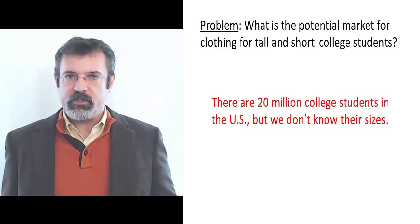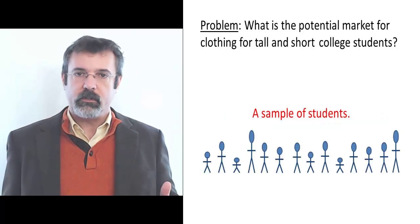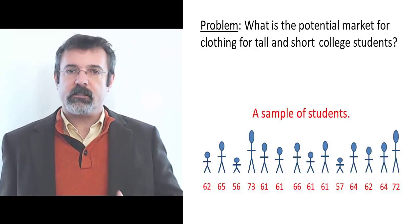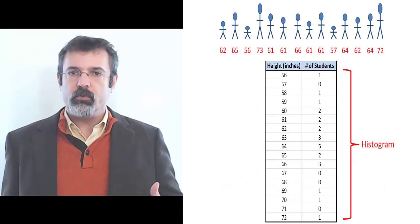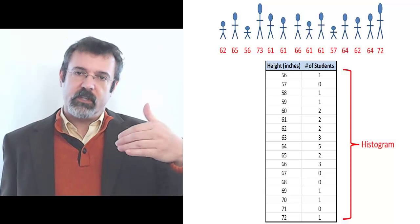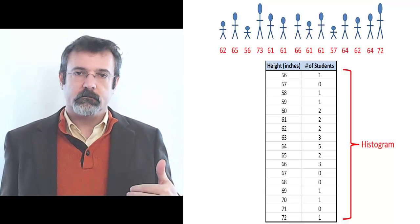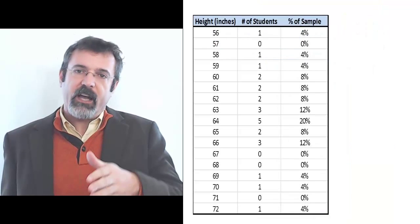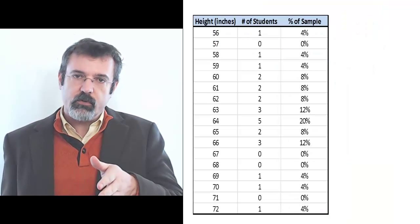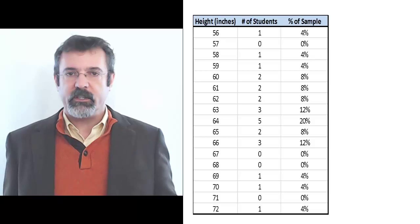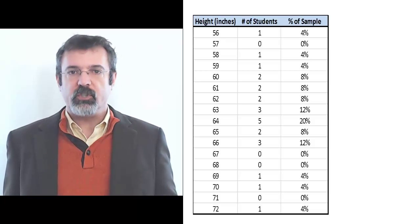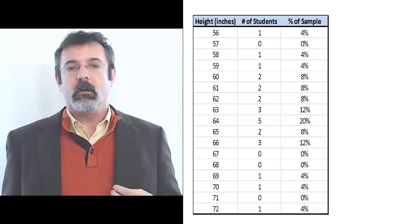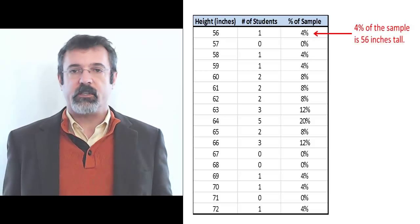What we can do is take a random sampling of students and measure their heights. We can then arrange their heights in a histogram, which shows us the number of students at each of various heights. In this sample we have 25 students. If we divide the number of students of each height by 25, we get the percentage of students at each height. For example, in this sample, 4% of the students are 56 inches tall.